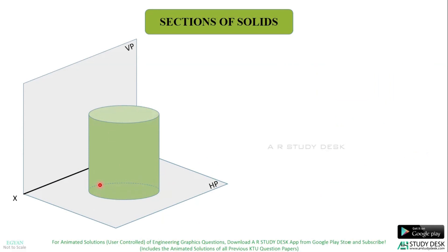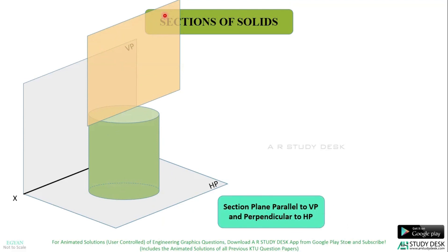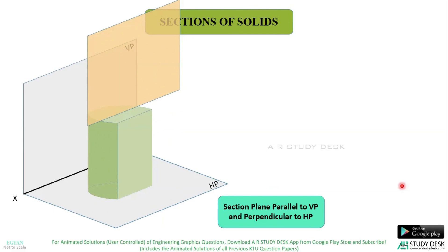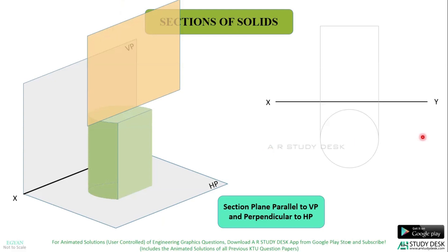This is again the cylinder resting on its base on HP. This section plane is parallel to VP and perpendicular to HP. Now let us see how this section plane cuts the solid. Draw the XY line and draw the complete cylinder using thin lines. Now this section plane can be seen as a line in the top view, so you will draw the section plane as a line in the top view. The section plane is parallel to VP so it will be parallel to the XY line in the top view.